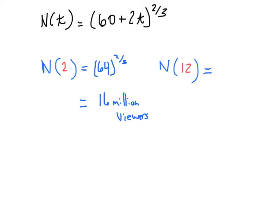And then we can do the same thing with 24. When you put 24 in, 24 times 2 is 48, so this ends up being 108 raised to the 2/3 power. 60 + 48 is 108. Raising that to the 2/3 power, you crank that out on your calculator, and you're going to get about 22.7 million viewers.